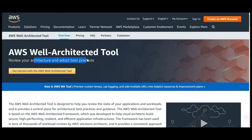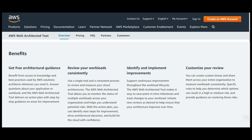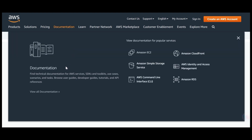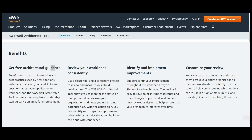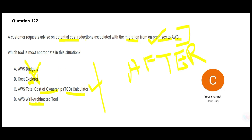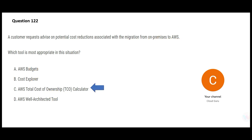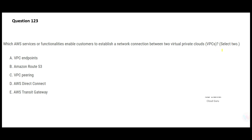Option D is the Well-Architected tool — this is to review your architecture and adopt best practices. It gives architectural guidance, like when building a bungalow you want to know how deep to dig for the pillars. You wouldn't use a calculator for that — you'd ask an architect. If you just want to know cost, you don't use this tool. This tool gives best practices for architecture design. So C — the TCO Calculator — is my final answer.